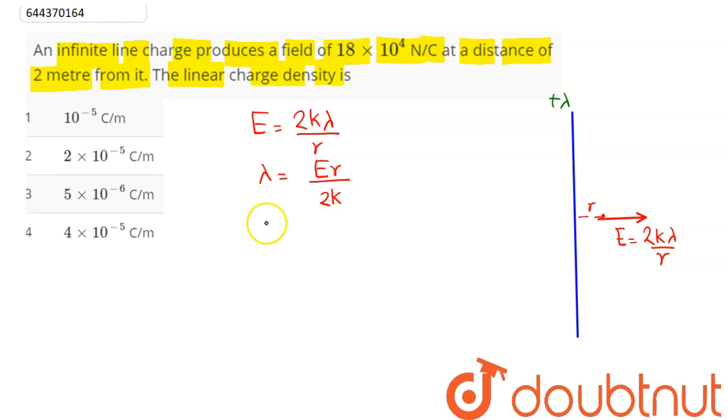Now, substituting the values, we have electric field intensity magnitude as 18 into 10 raised to power 4 newton per coulomb. So 18 into 10 power 4 into distance 2 meters, divided by 2 into k.